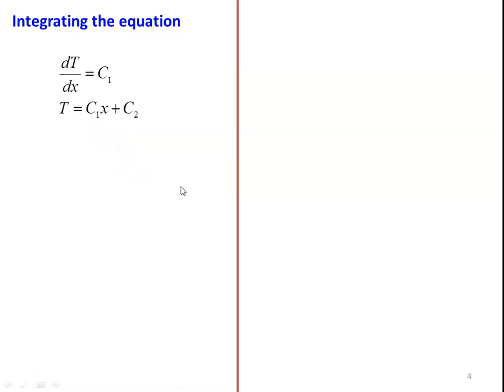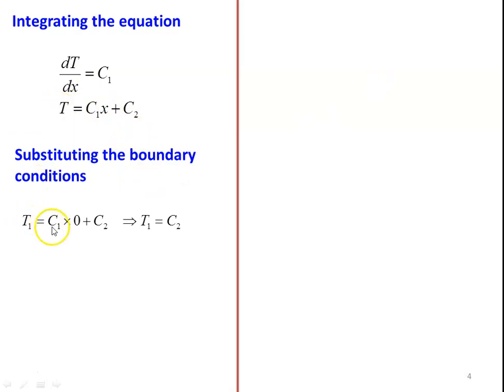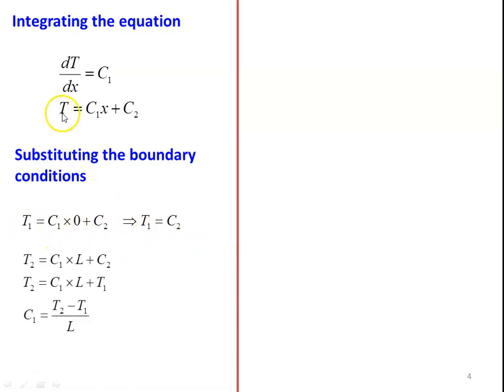The boundary conditions are: x = 0, T = T1; and x = L, T = T2. Taking the first boundary condition, x = 0, T = T1: T1 = C1·(0) + C2, giving T1 = C2, so C2 = T1. Taking the second boundary condition, T = T2 at x = L: T2 = C1·L + C2. Substituting C2 = T1: T2 = C1·L + T1. Rearranging: C1 = (T2 − T1)/L.